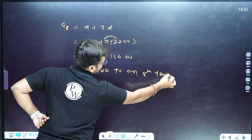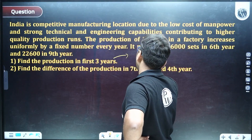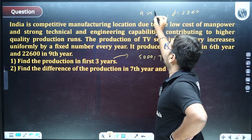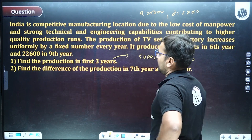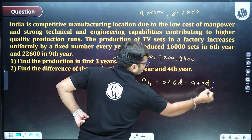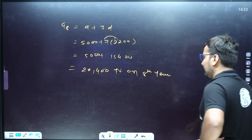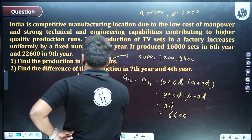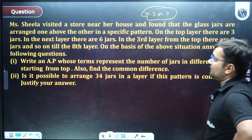Next, we find the first three years of production: year one = 5,000; year two = 5,000 + 2,200 = 7,200; year three = 9,400. To find the difference in production between the seventh and fourth year — a7 − a4 — simplify: (a + 6d) − (a + 3d) = 3d = 3 × 2,200 = 6,600. No need to individually calculate a7 and a4.